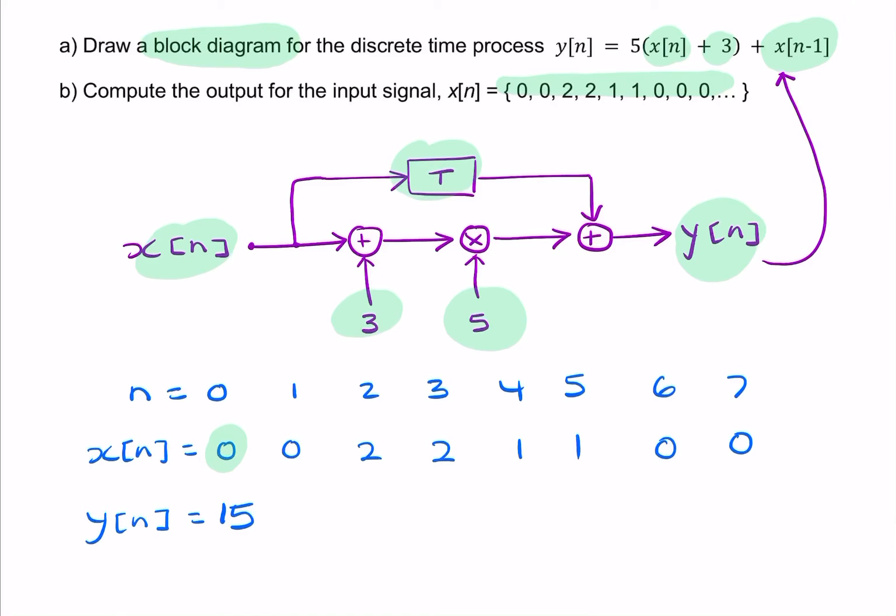The next value for y will be similar. So it's 5 times x of 1, x of 1 is still 0. So 0 plus 3 is 3 times 5 is 15. We're adding the previous value for x. The previous value for x is still 0. When n equals 1, the value of n minus 1 is 0, and x of 0 is still 0. So no change, we still have 15 plus 0.